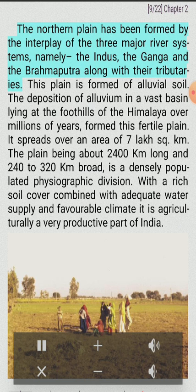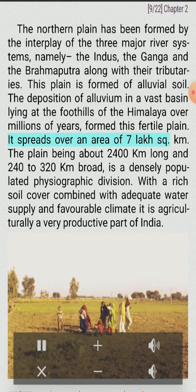The Northern Plain has been formed by the interplay of three major river systems, namely the Indus, the Ganga and the Brahmaputra along with their tributaries. This plain is formed of alluvial soil. The deposition of alluvium in a vast basin lying at the foothills of the Himalaya over millions of years formed this fertile plain. It spreads over an area of 7 lakh square kilometers, is about 2,400 kilometers long and 240 to 320 kilometers broad, and is a densely populated physiographic division. With a rich soil cover combined with adequate water supply and favorable climate, it is agriculturally a very productive part of India.